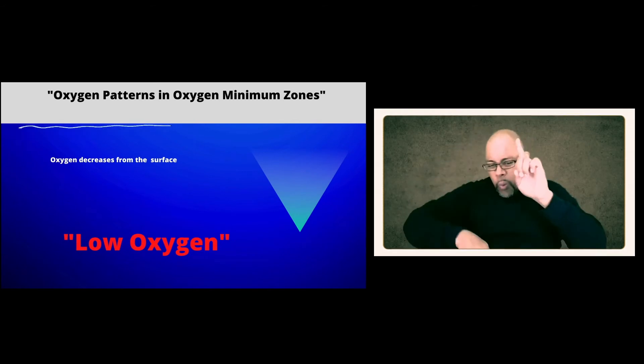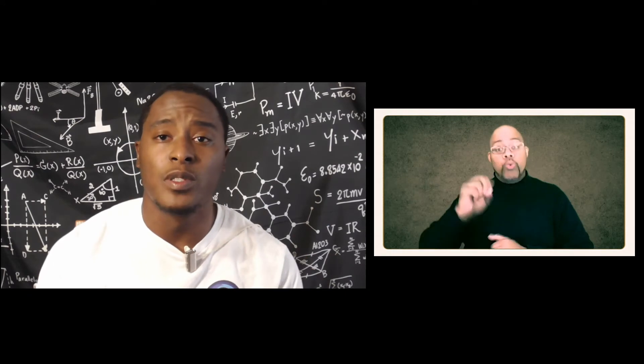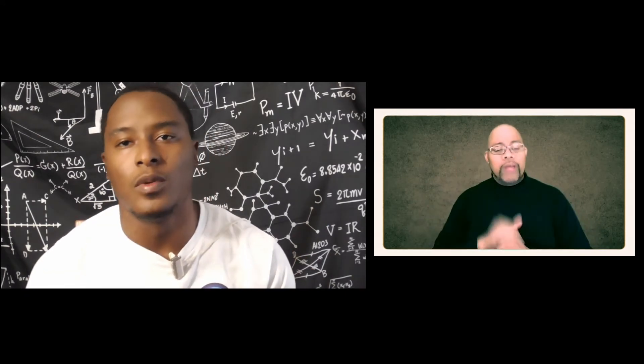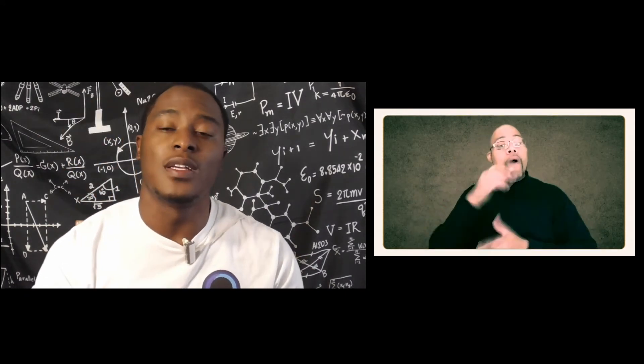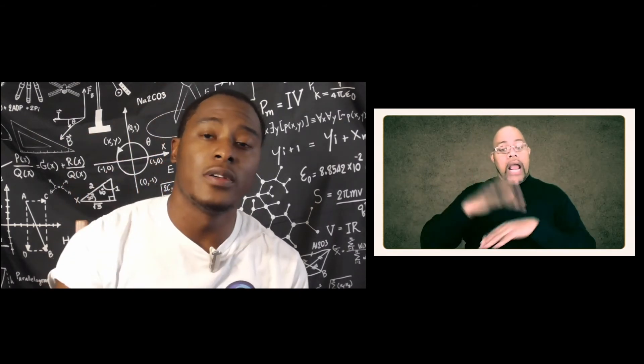Oxygen minimum zones, you can find them almost anywhere. Well, not almost anywhere. You can mostly find them contained on the western sides of most continents, so on the California coast.